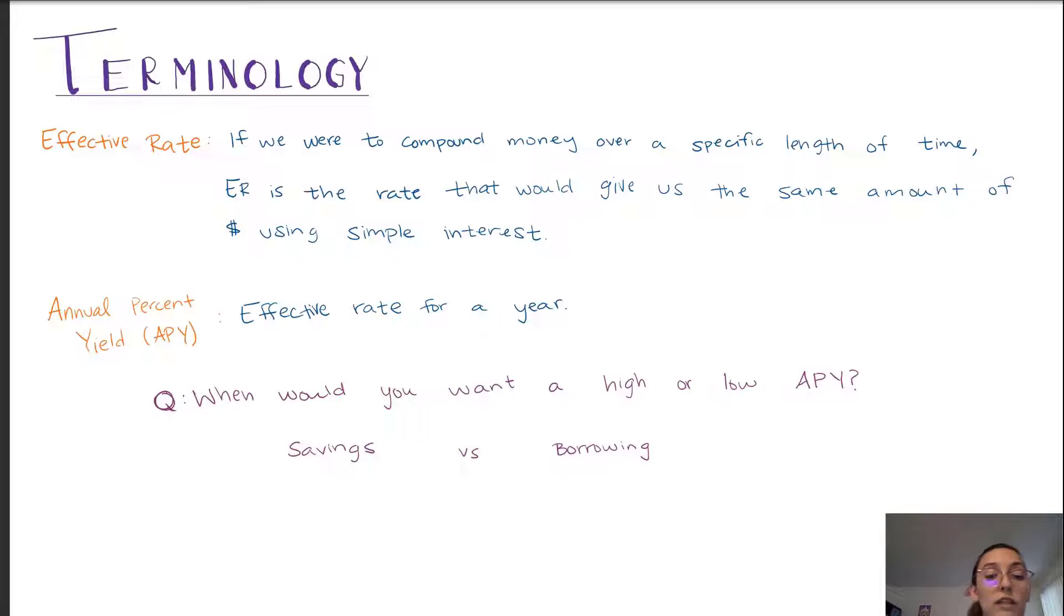Well when we're saving, this is a situation where we would want a high APY because we want to make more money. Now when we're borrowing, we're not the ones making money, we're the ones paying. So this is a situation where we would want a low APY. Keep that in mind.